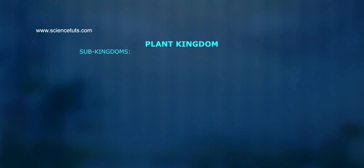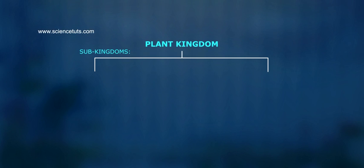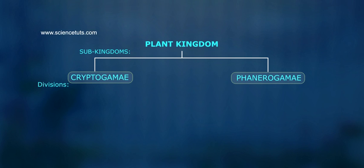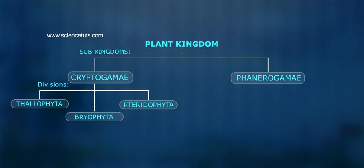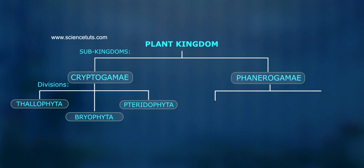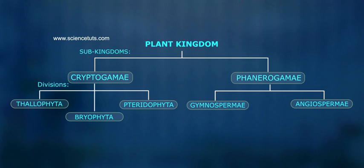The Plant Kingdom is divided into two subgroups: Cryptogamy and Phanerogamy. Subgroup Cryptogamy is divided into three divisions: Thallophyta, Bryophyta, and Pteridophyta. Subgroup Phanerogamy is divided into two divisions: Gymnospermy and Angiospermy.